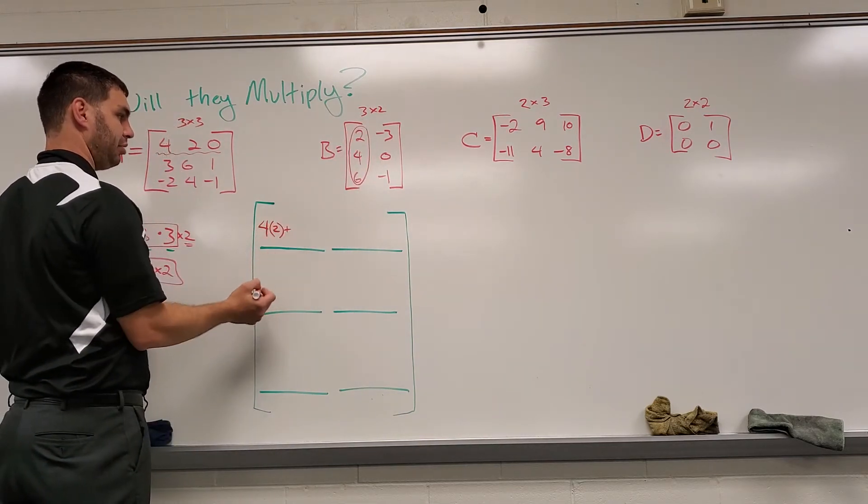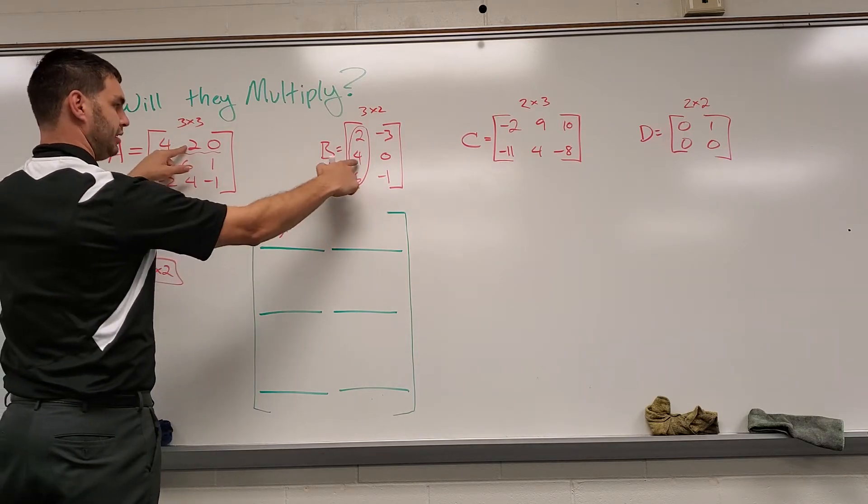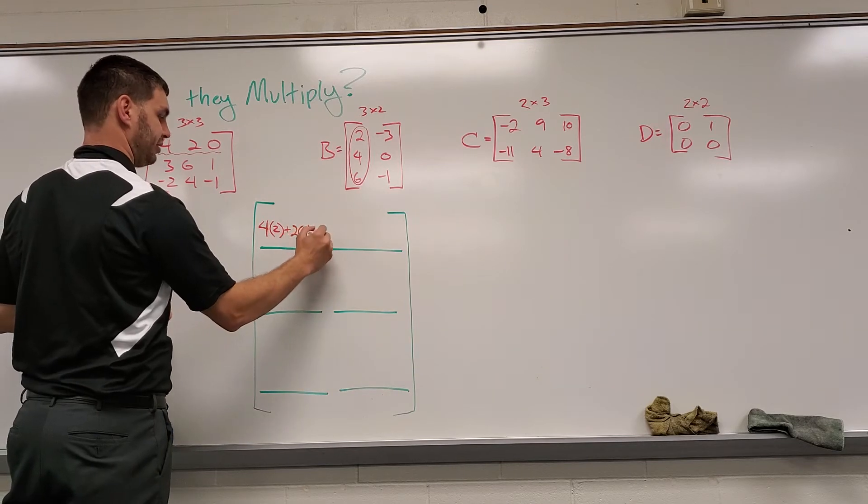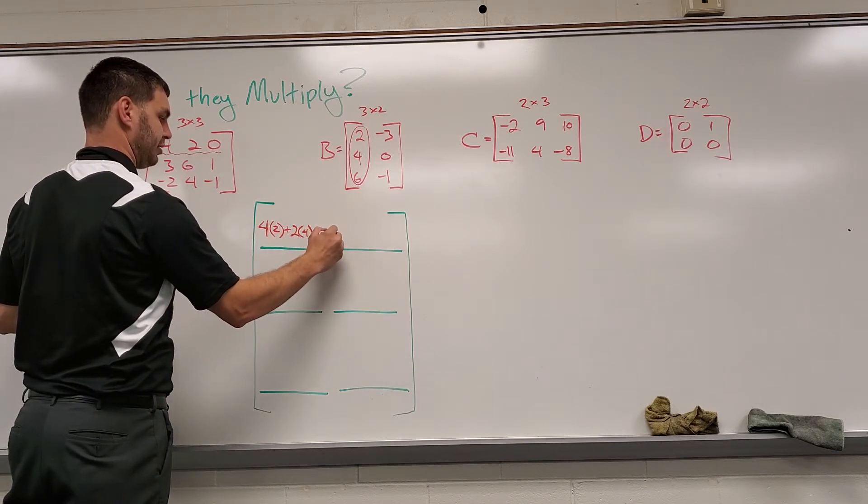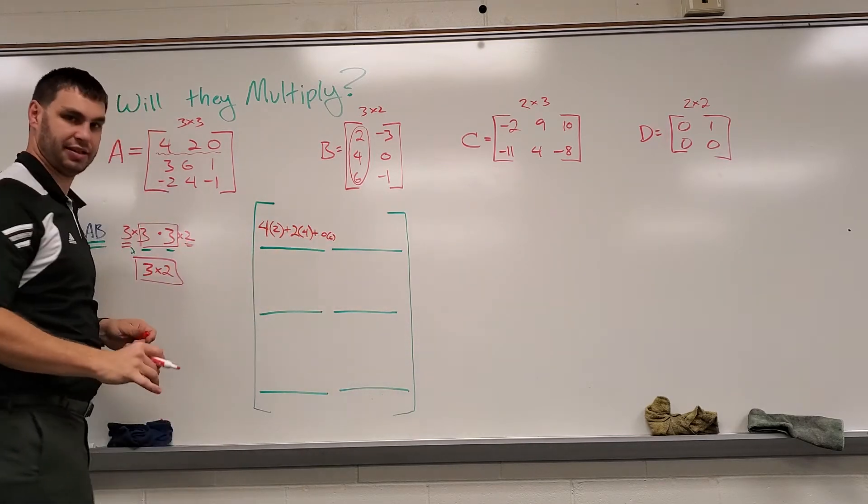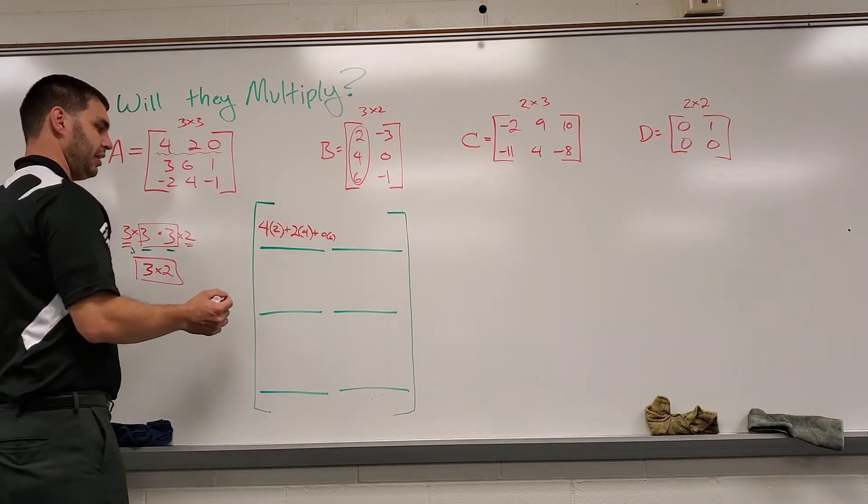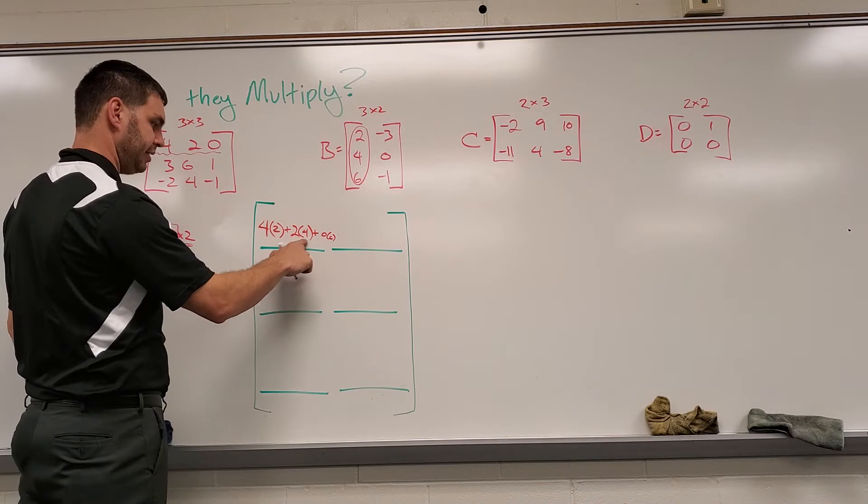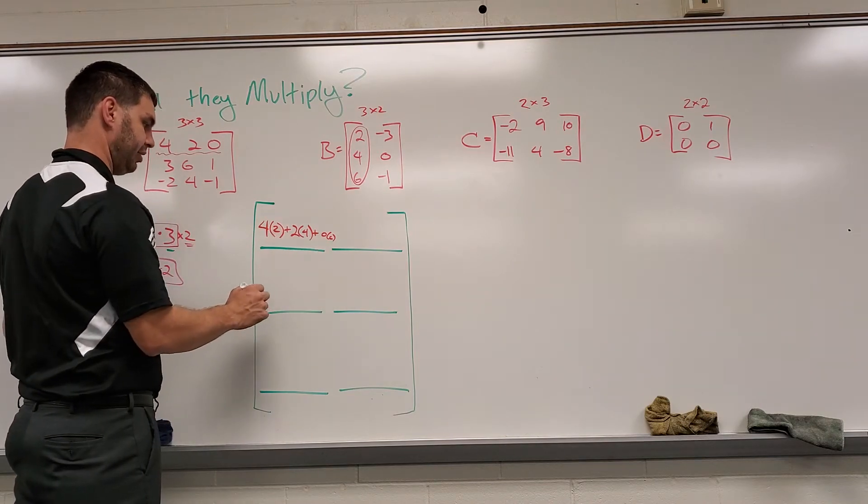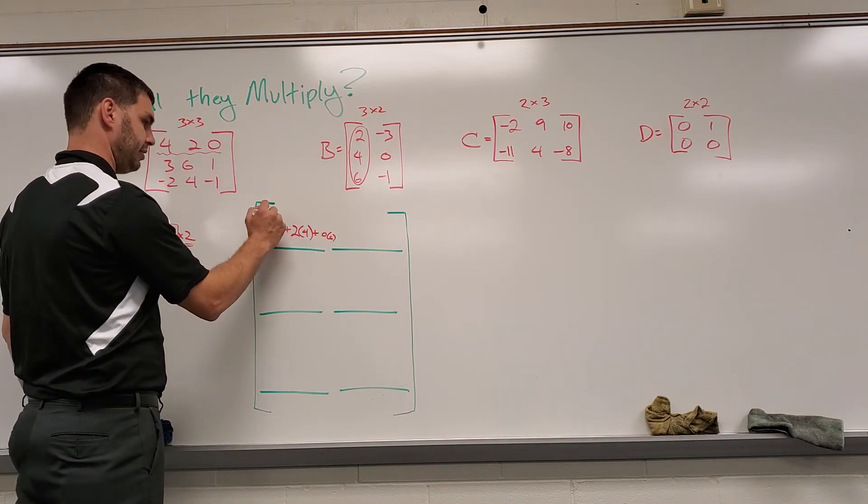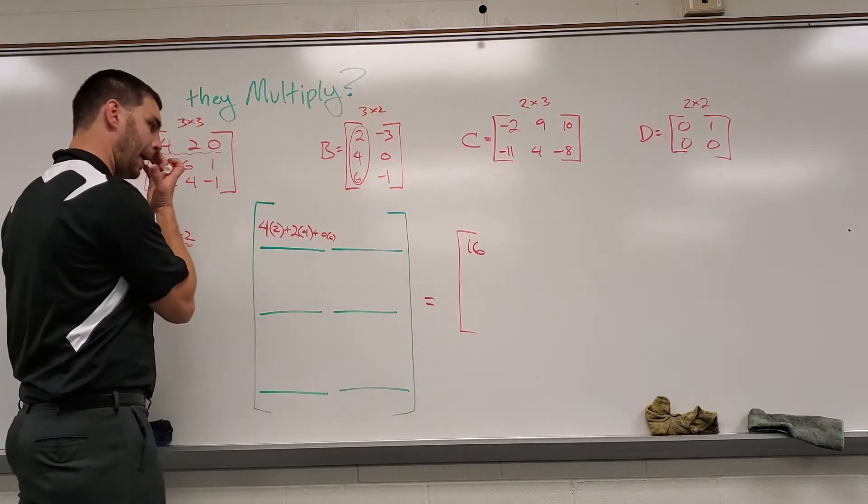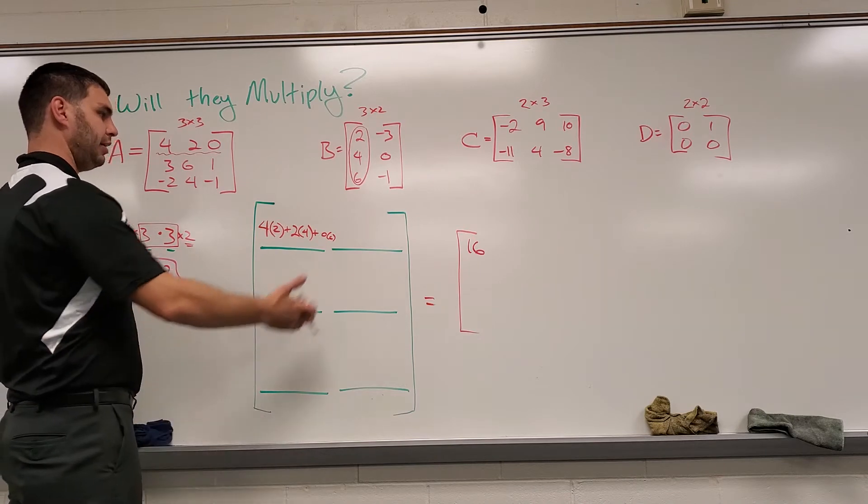Then we're going to add these up plus the next one, two times four, plus zero times six. So that's why I need a lot of room. And we can get this to be, let's see, eight plus eight plus zero. Eight plus eight is 16. So equals, like a small one over here, this will be 16. And eventually we'll fill these all out.